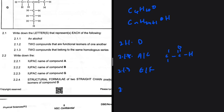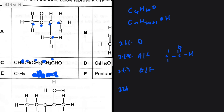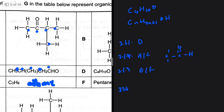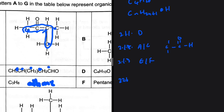Question 2.2.1: the IUPAC name of compound A. Sticking to the basics, we need the longest carbon chain. Counting: one, two, three, four carbons — and going straight we also get four carbons. Wait, let me recount — one, two, three, four, five — so we have pentane.